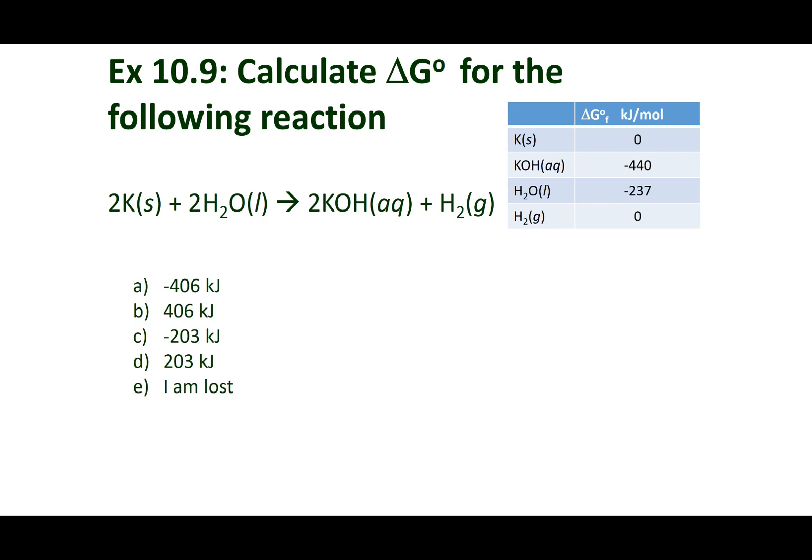All right, ladies and gentlemen, let's go ahead and tackle this problem out. So I want the delta G of reaction. And to get the delta G of reaction, I'm going to sum up the delta G's of formation of my products minus the summation of the delta G's of formation of my reactants. And I can do this because I gave you guys delta G's of formation.